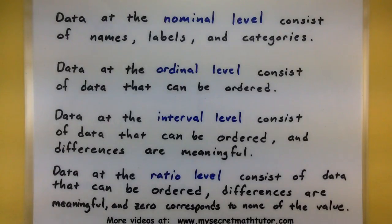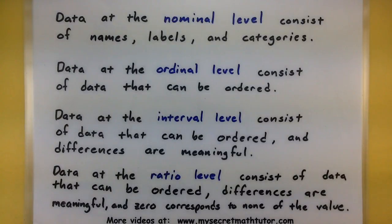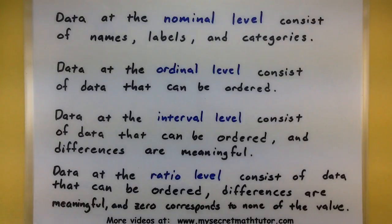The last of these levels is the ratio level. This is data that you can order, the difference between two values is meaningful, and zero actually corresponds to none of the value. When going through these levels, it's often handy to ask yourself some specific questions to see where the data might fall.